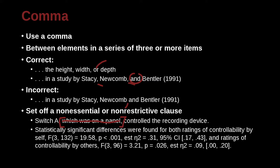Here's another example. Statistically significant differences were found for both ratings of controllability by self — F(3, 132) = 19.58, p < 0.001 — and all of these statistical details down here. And then down here we have a comma, and ratings of controllability by others, comma. So what are we doing here? We're putting a comma before the statistical information and a comma after.